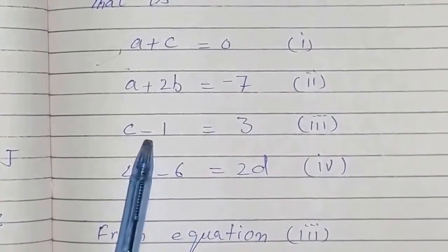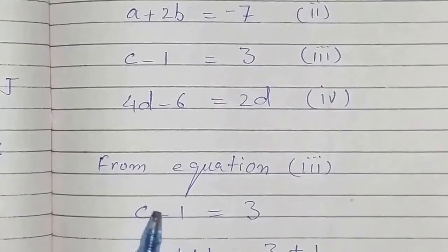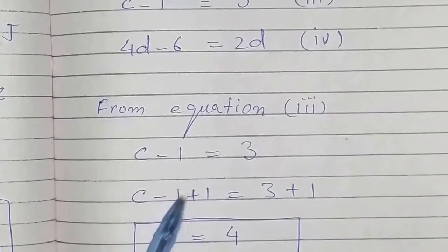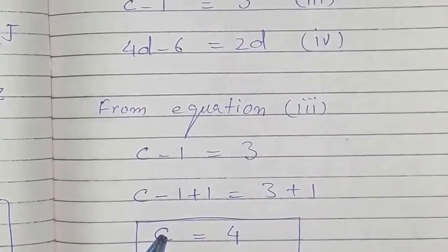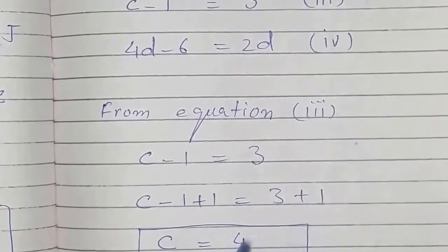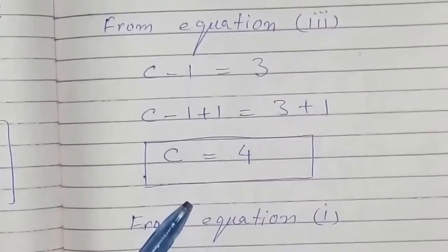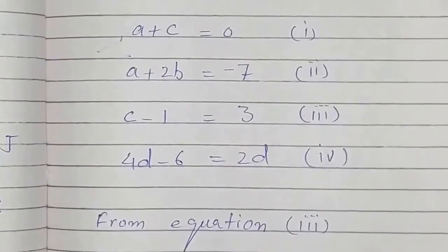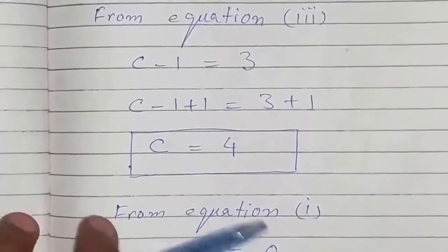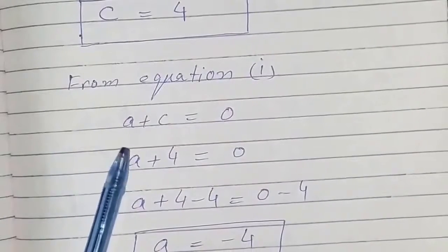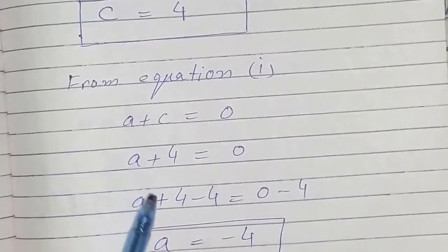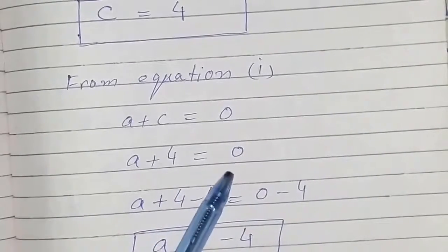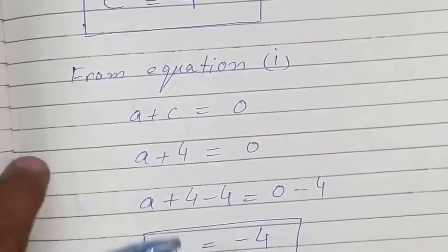From equation 3, we can find the value of C: C minus 1 equals 3. Adding plus 1 on both sides, the minus 1 cancels out and C equals 4. From equation 1, A plus C equals 0. Substituting C equals 4, and subtracting 4 from both sides, this gives A equals negative 4.